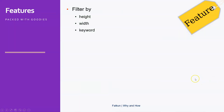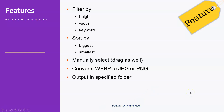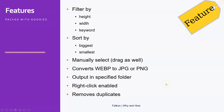So what are the features of Fatkun? You can filter, sort, select, and drag images. It can convert WebP — a format used by bigger companies like Nike and Adidas — to JPG or PNG, which is very nice. You can output your downloads into a specified folder. There's also an option to right-click on any image on a web page, select Fatkun, and it will run. And there's a feature to remove duplicates automatically, so you can't mess it up at all.